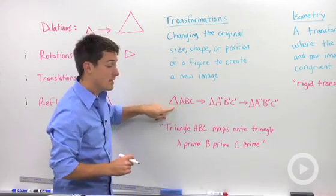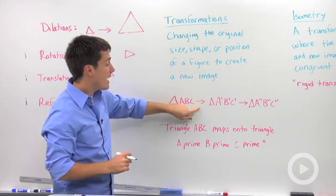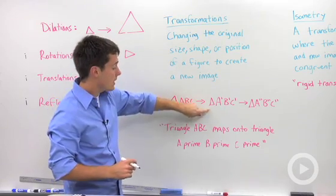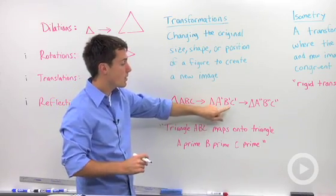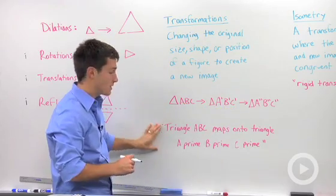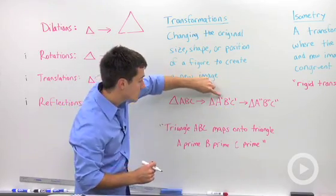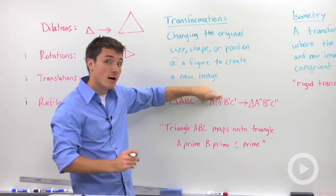you would write this as triangle ABC maps onto triangle A prime, B prime, C prime. And I've written that down below. So those little apostrophes actually mean prime.